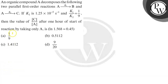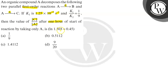An organic compound A decomposes in two parallel first-order reactions: A with rate constant k1 gives B, and A with rate constant k2 gives C. Given k1 is 1.25×10⁻⁵ s⁻¹ and k1/k2 = 1/9, so k2 = 9k1. We need to find the value of c/a after one hour from the start of reaction, given that ln(1.568) = 0.45.